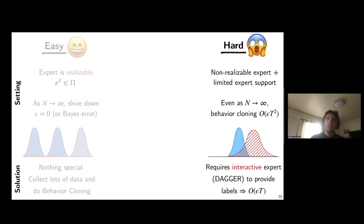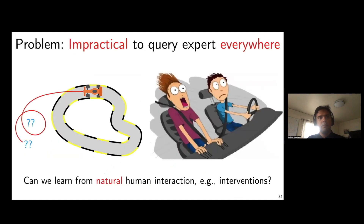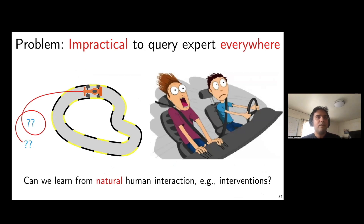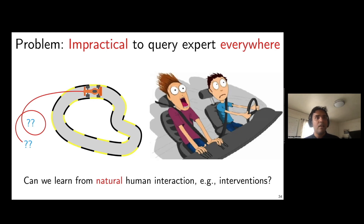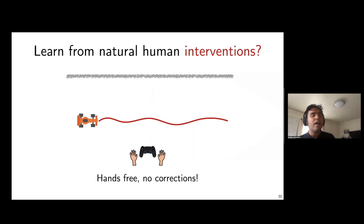But is this practical? Is it reasonable to ask the human for labels for every situation the robot visits? When you learned to drive, you didn't do crazy things like entering the wrong side of the highway and asking your instructor for corrections. This is not only a lot of effort for the human — it may actually be unsafe. How can we learn from more natural human interactions, say interventions?